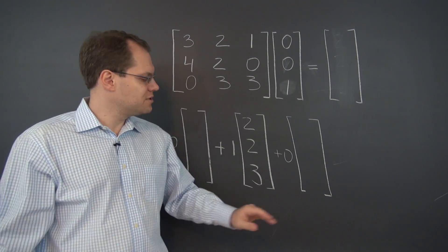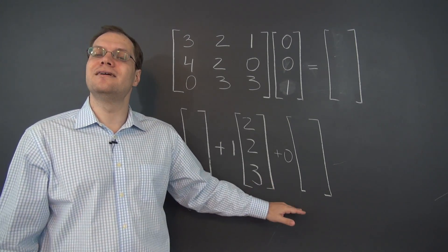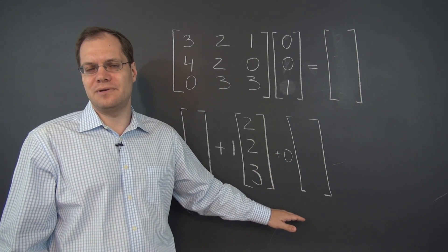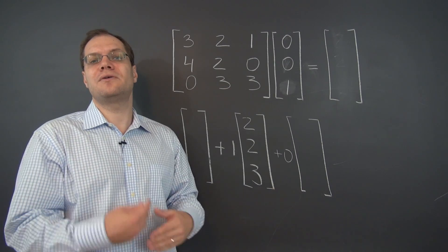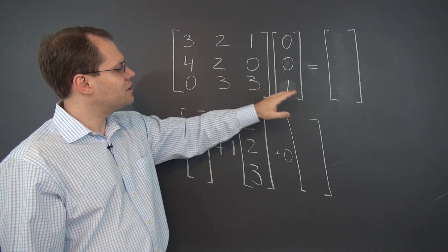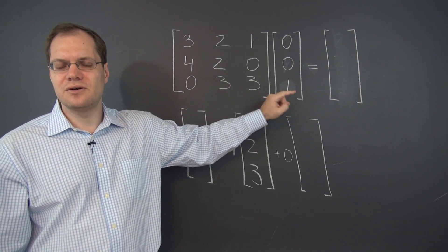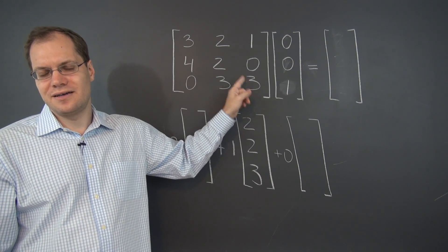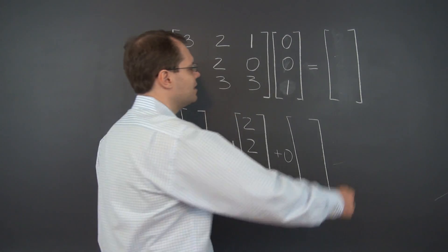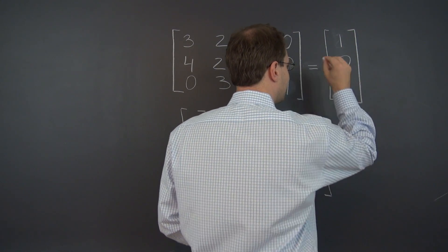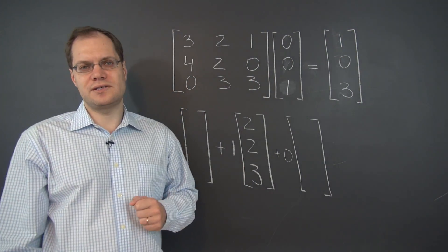Well, maybe in your head you will temporarily have to imagine this linear combination written out. But I think with a little bit of practice, you'll be able to just look at this and know that this matrix will pick out the third column of the matrix on the left. And the answer will be the third column. That's a nice block way of seeing what's going on.